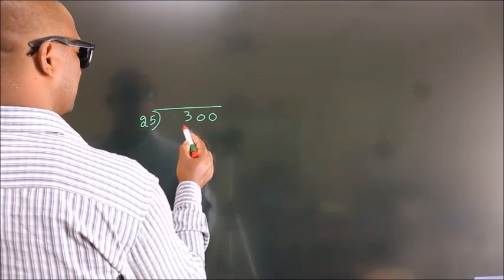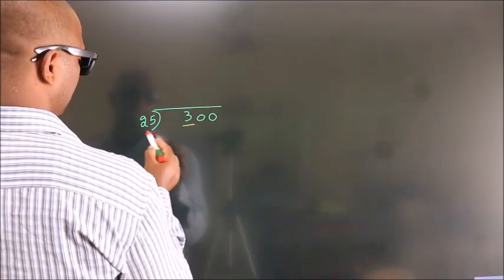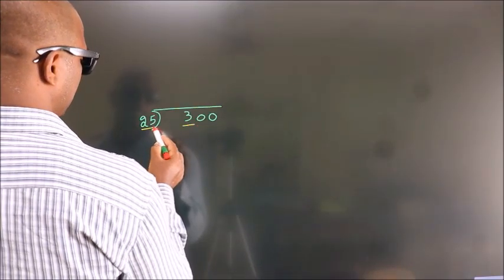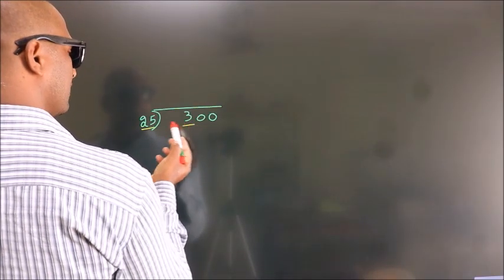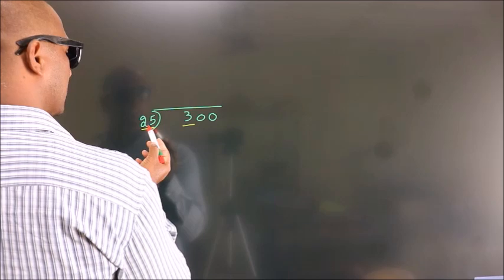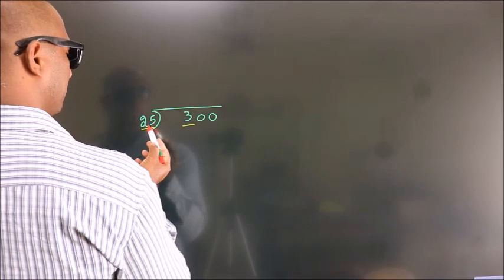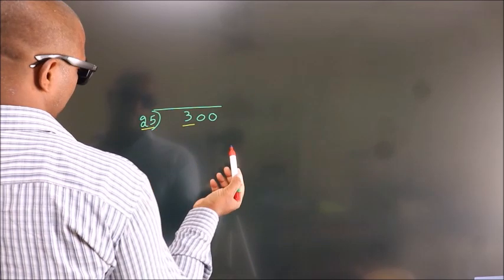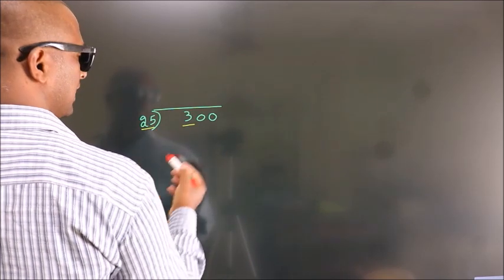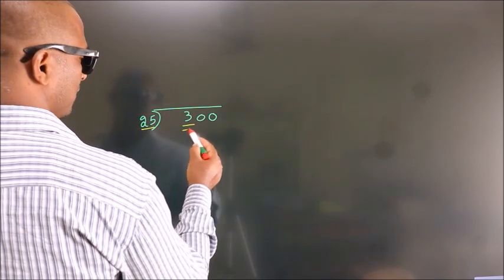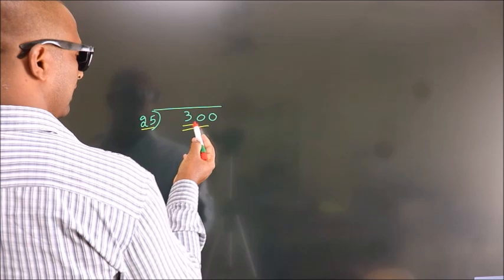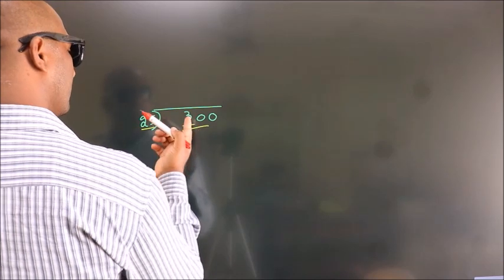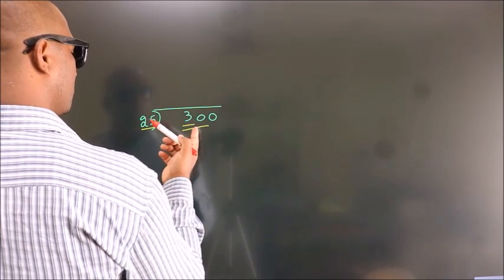Here we have 3. Here 25. 3 is smaller than 25. So we take two numbers — 30. A number close to 30.